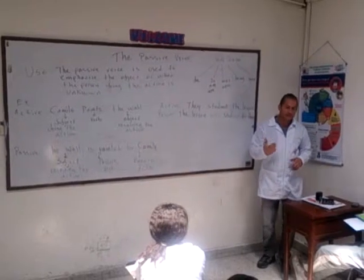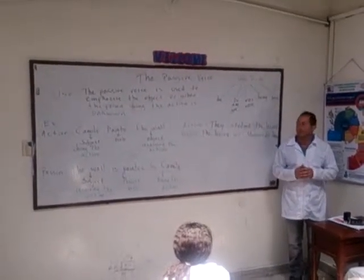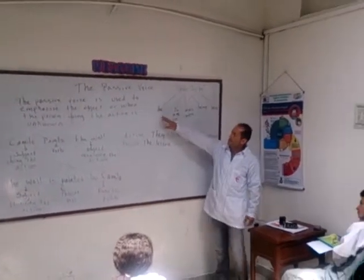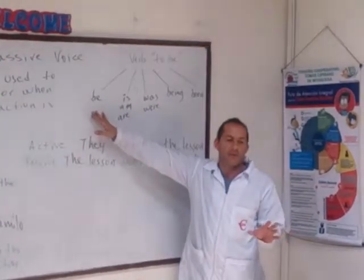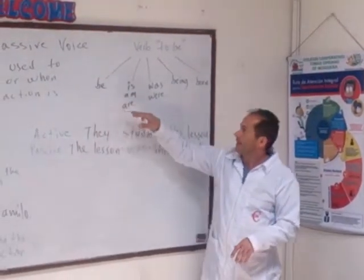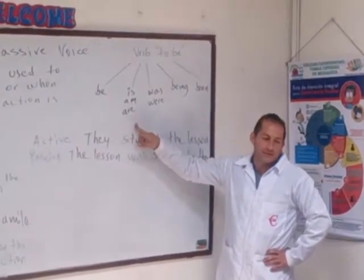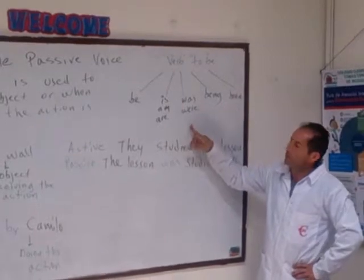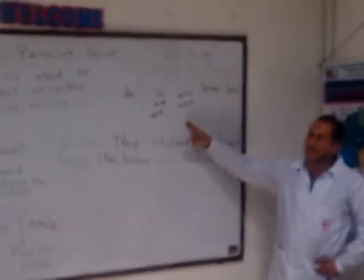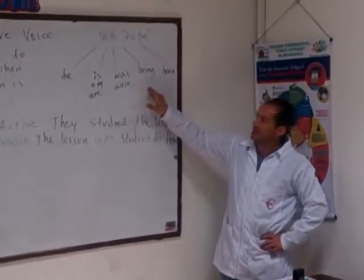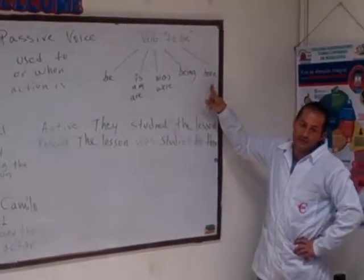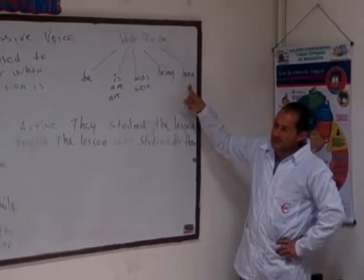It is really important to know the different forms of the verb to be. We have: am/is/are, which are used with simple present; was/were, which are used with simple past; being, which is used with continuous tenses; and been, which is used with perfect tenses.